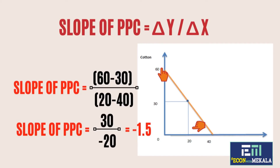Let's assume we are moving from 30 units of cotton to 60 units of cotton. So the difference in the y-axis is 60 minus 30. The difference in the x-axis is 20 minus 40. So 30 divided by minus 20 gives us minus 1.5, which means to produce one unit of wool, you need to sacrifice 1.5 units of cotton.